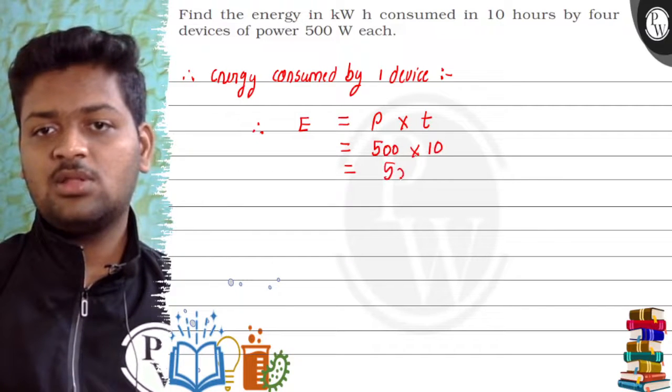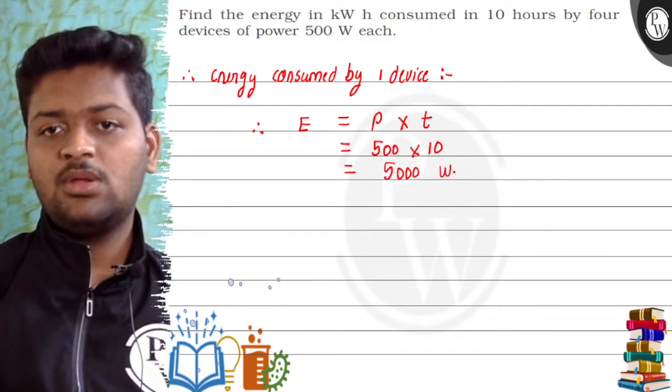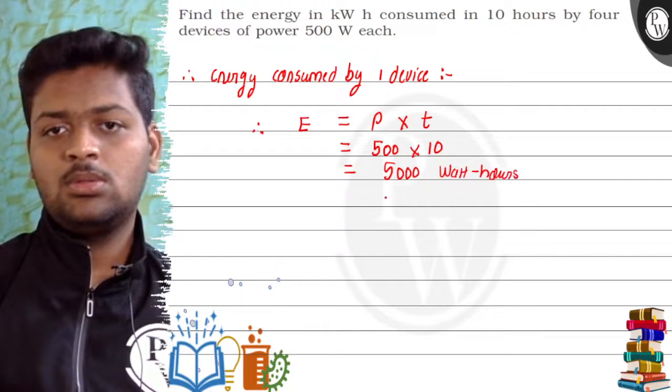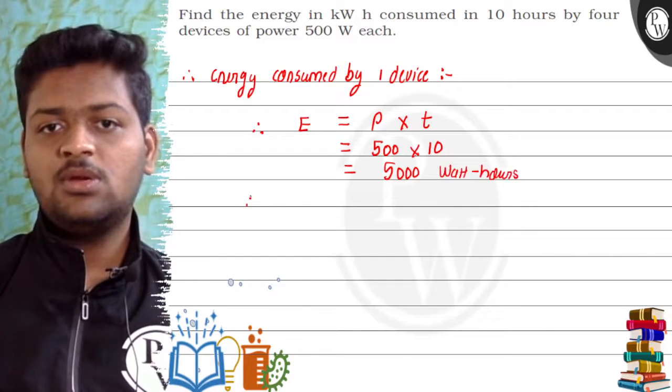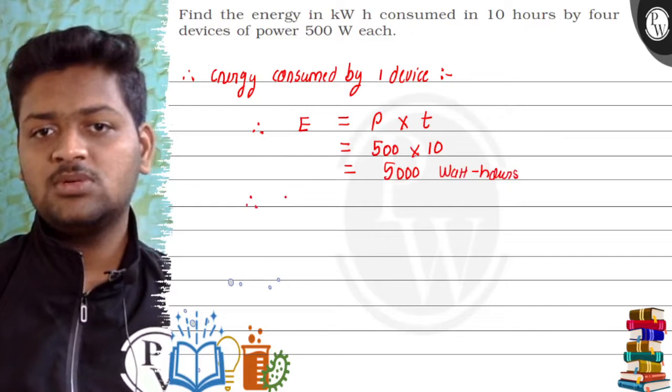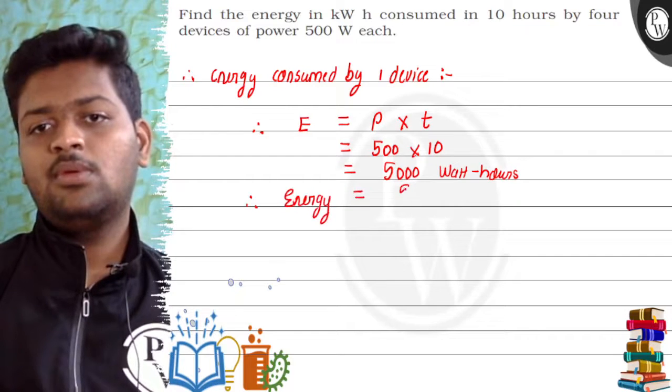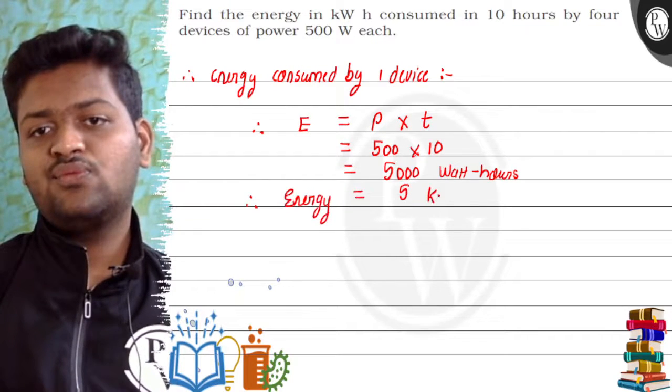So it will be 5000 watt. But since we want in kilowatt per hour, energy will be 5 kilowatt hours.